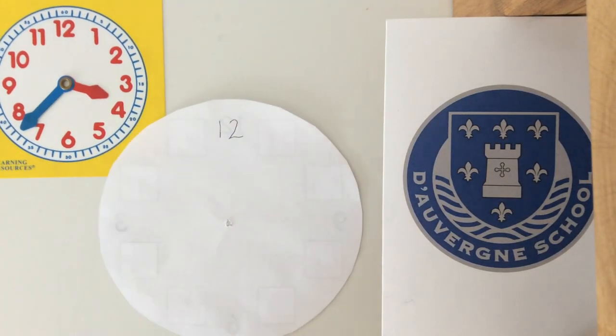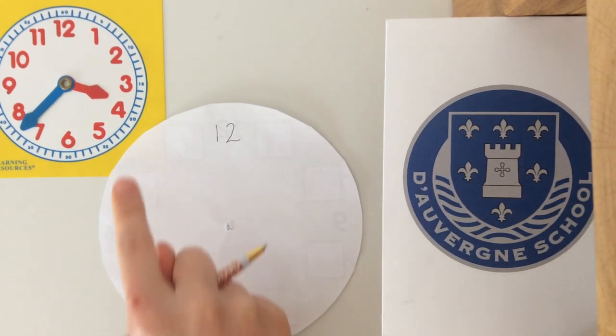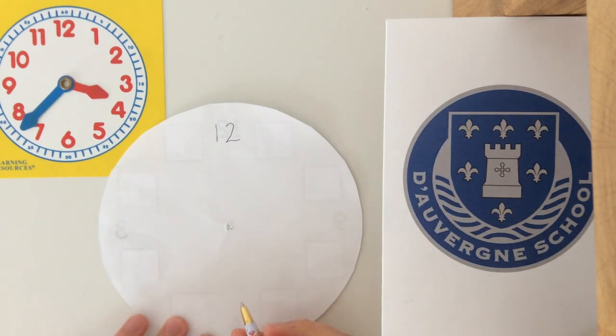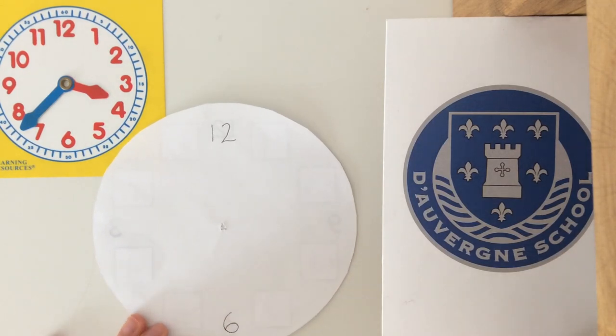Our 6 goes halfway around our clock face, so use your knowledge of fractions to find halfway around your clock face. Our 3 goes a quarter of the way around our clock face from our 12. See if you can find where that goes.